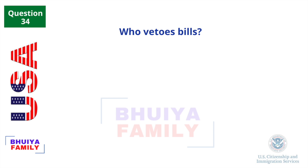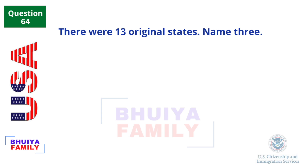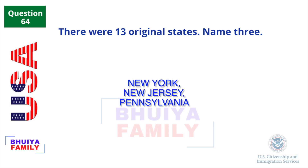Who vetoes bills? The President. There were thirteen original states. Name three. New York, New Jersey, Pennsylvania.